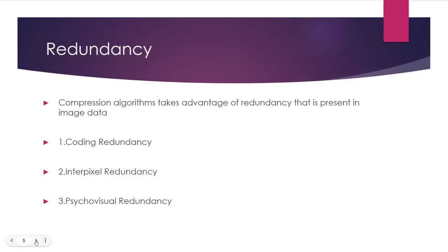Uncompressed images demand substantial memory in both RAM and storage, posing challenges in terms of storage space and transfer times between devices. There are three types of redundancies that exist. The first is coding redundancy, which occurs when a smaller number of code words are needed instead of larger symbols.